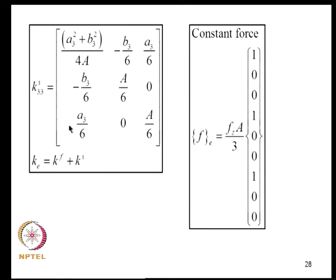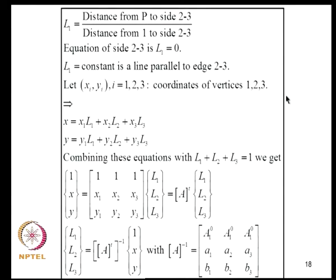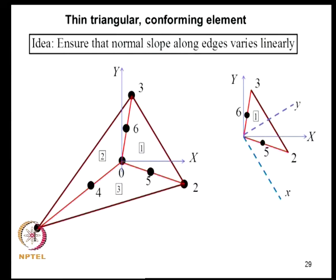The element stiffness matrix Kₑ is the sum of the flexure and shear contributions. For a constant applied force, the equivalent nodal forces are evaluated using the principle of virtual work. This element is conforming because the field variables vary linearly along the edges, ensuring the required continuity conditions are satisfied for all three variables W, θX, and θY.